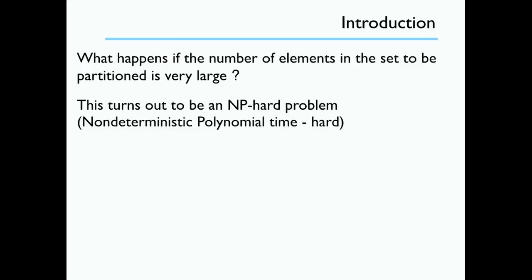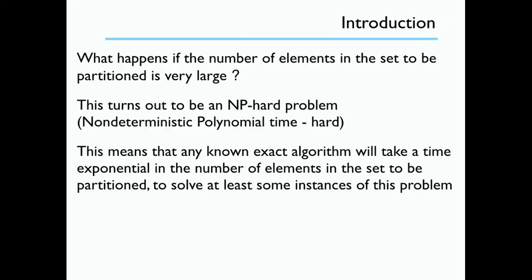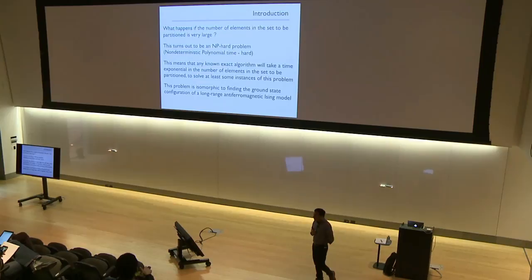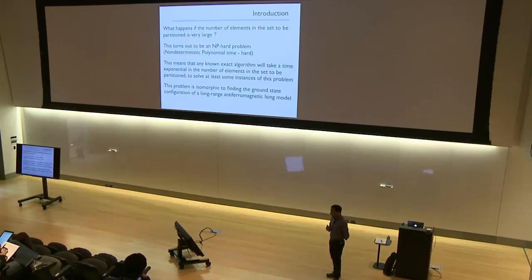It turns out that this problem is actually NP-hard, which means that there are some instances which are computationally very hard and don't scale with polynomial time. It also turns out that this problem is isomorphic to finding the ground state configuration of a long-range anti-ferromagnetic Ising model, and this is what I am going to show next.